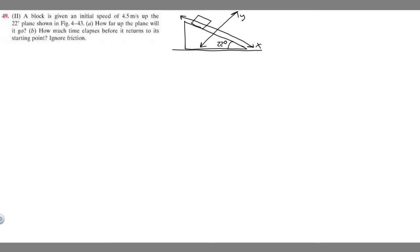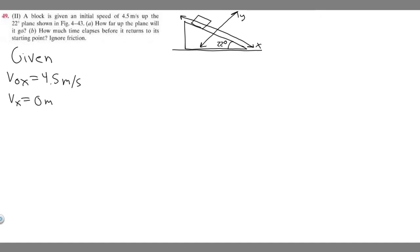Now let's write down what we're given. The initial velocity is 4.5 meters per second up the plane — that's v-sub-0-x, the initial velocity in the x-direction. For Part A, how far up the plane will it go? The block is going up but slowing down, and at some point it stops, so the final velocity v-sub-x equals 0 meters per second. We don't know acceleration yet, and we're trying to find delta x — the change in position along the x-axis.